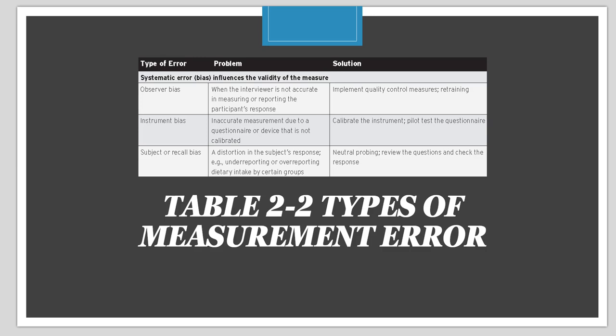Some problems with measurement error you need to know: observer bias occurs when the interviewer is inaccurate in measuring or reporting participants' responses. Instrument bias occurs when the instrument has errors or produces inaccurate measurements — this includes the calibration of an instrument. A great example is the skinfold test at a gym, which has one of the largest instrument biases possible. The instrument is both the human performing it and the actual tool. Most people can't do a skinfold very well — it requires a lot of practice to be accurate.